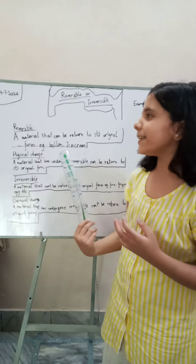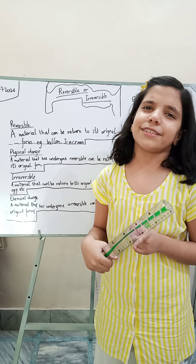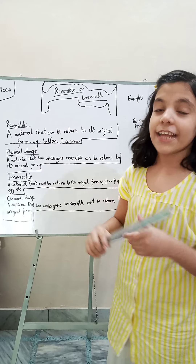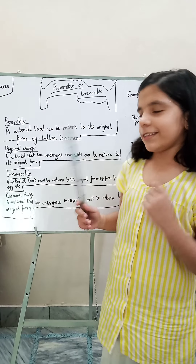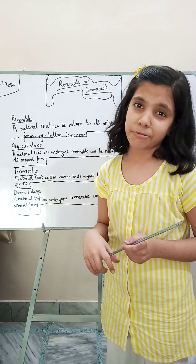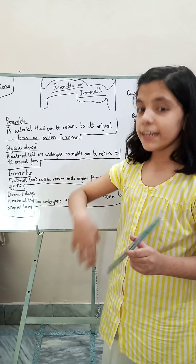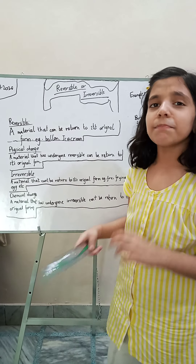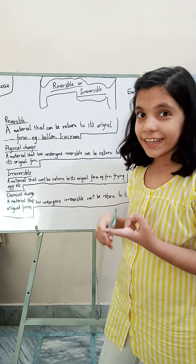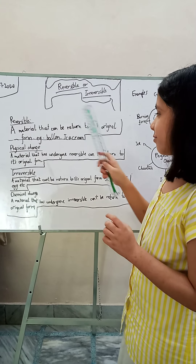Next is irreversible. But before that — reversible has physical change. Now you might have the question: what is physical change? Physical change is a material that has undergone a reversible change and can be returned to its original form. This kind of change is known as physical change. A material that can be returned to its original form.